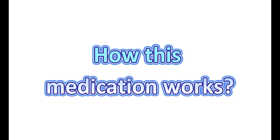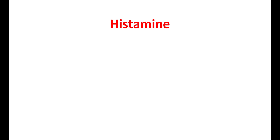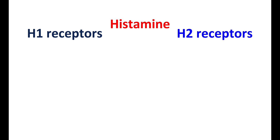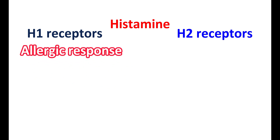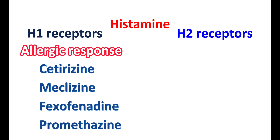First, let us discuss how this medication works. Histamine plays an important role in our body — it can act as a local mediator as well as a neurotransmitter. Histamine produces its action through different types of histamine receptors. H1 receptors are mainly located in the CNS and play an important role during allergic responses; when activated, they produce vasodilation and increase capillary permeability.